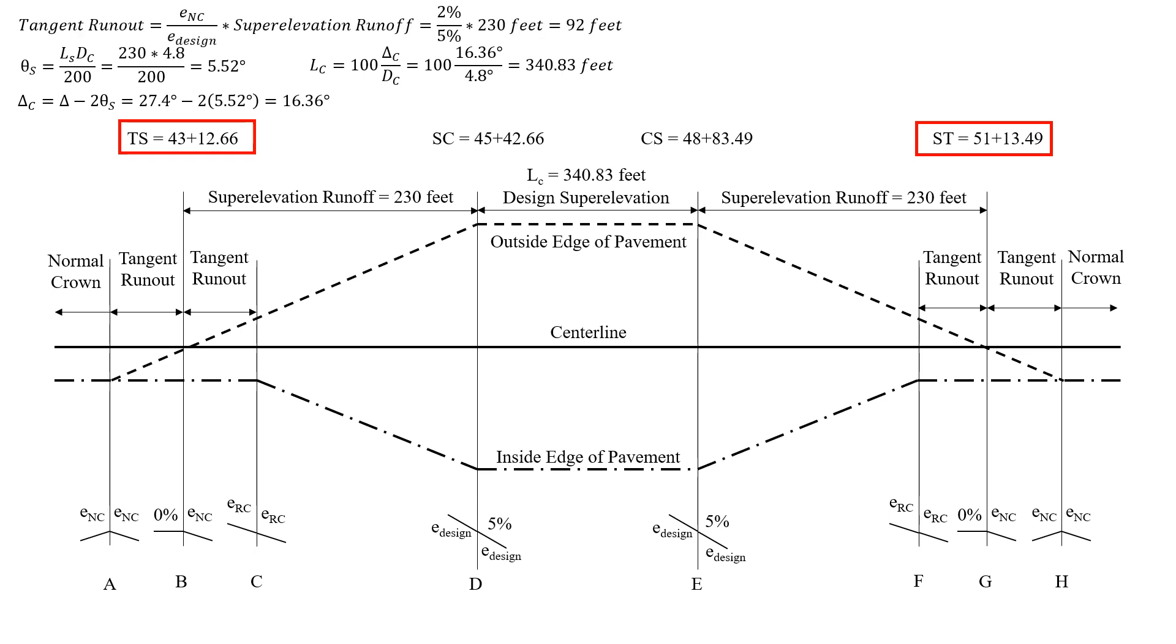Now we're asked to find the cross slope at station 50. So we need to know a little bit more information here. We need to know the length of our tangent runout, and that's our normal crown divided by our design superelevation multiplied by our superelevation runoff. So that's 2 divided by 5 times 230 feet, which is 92 feet.